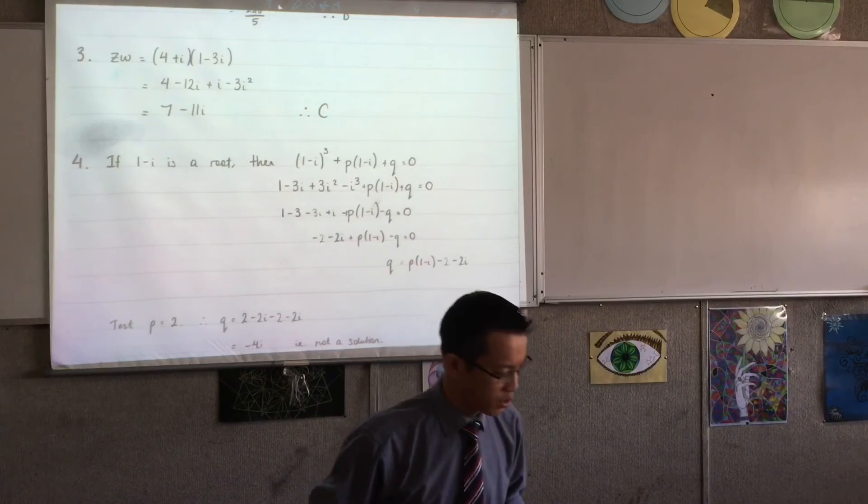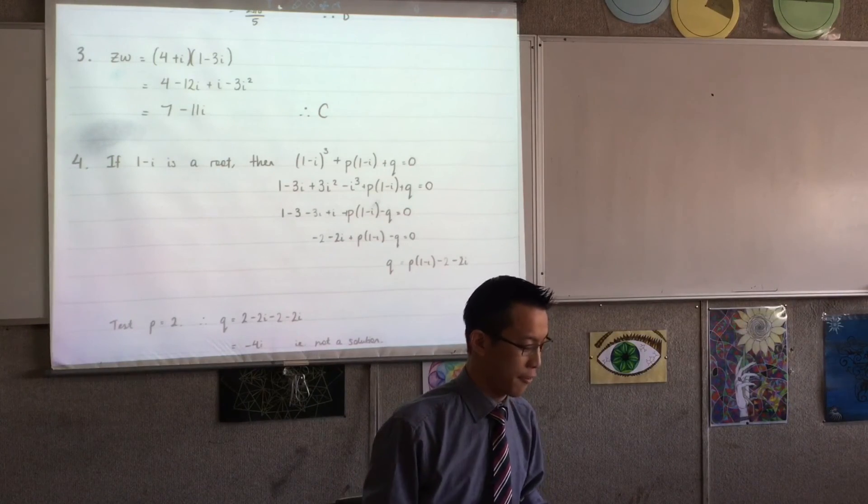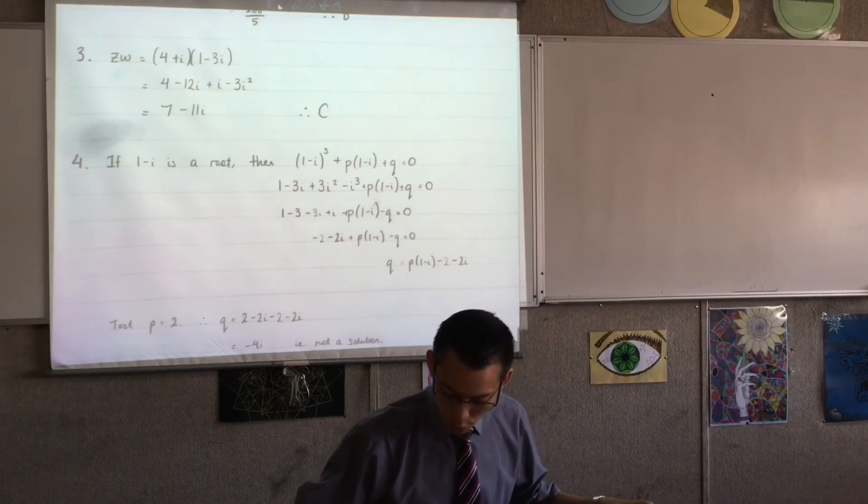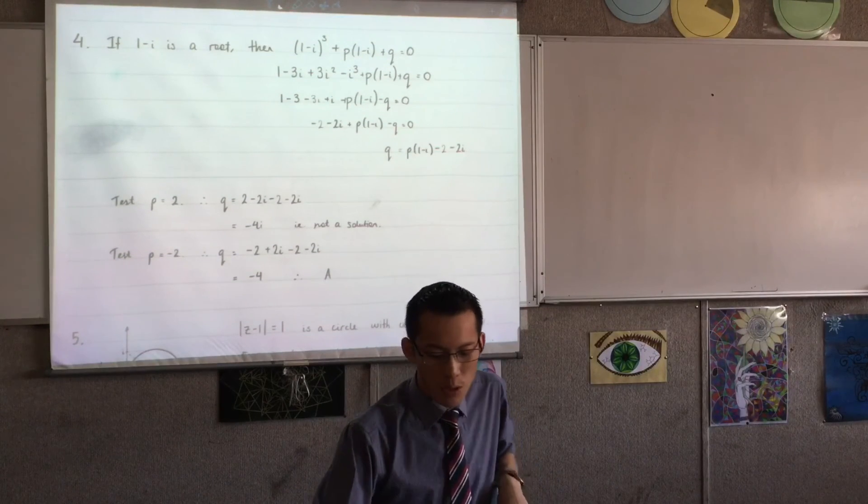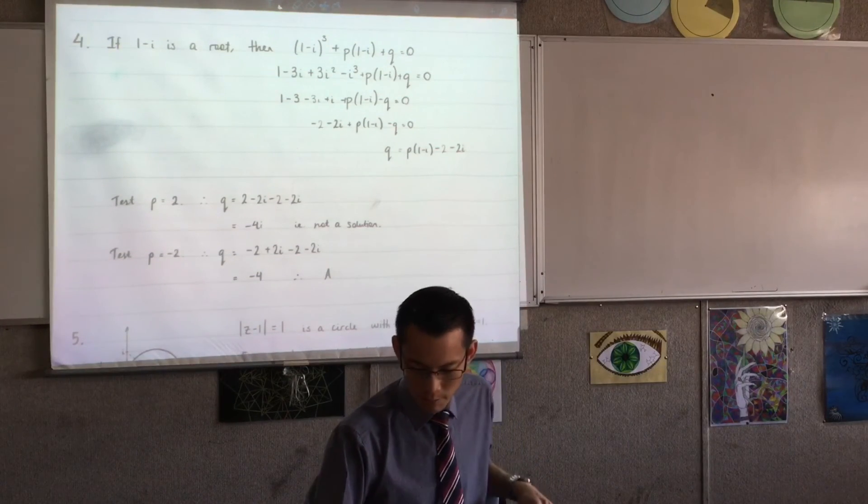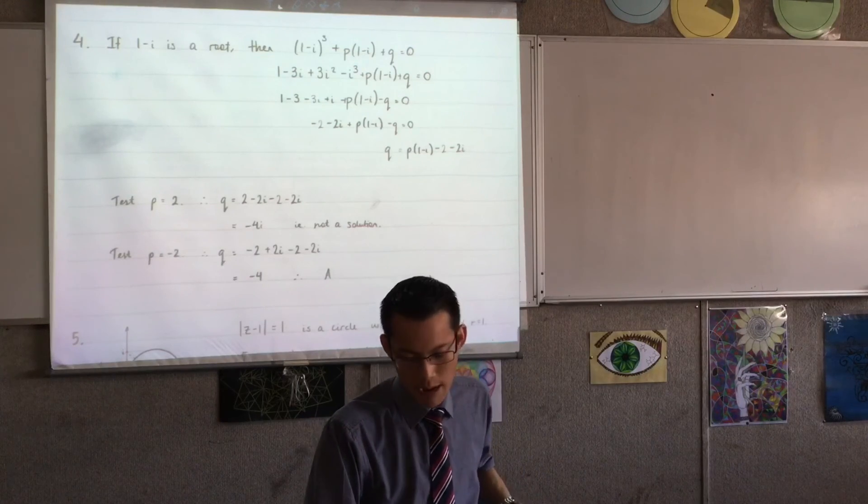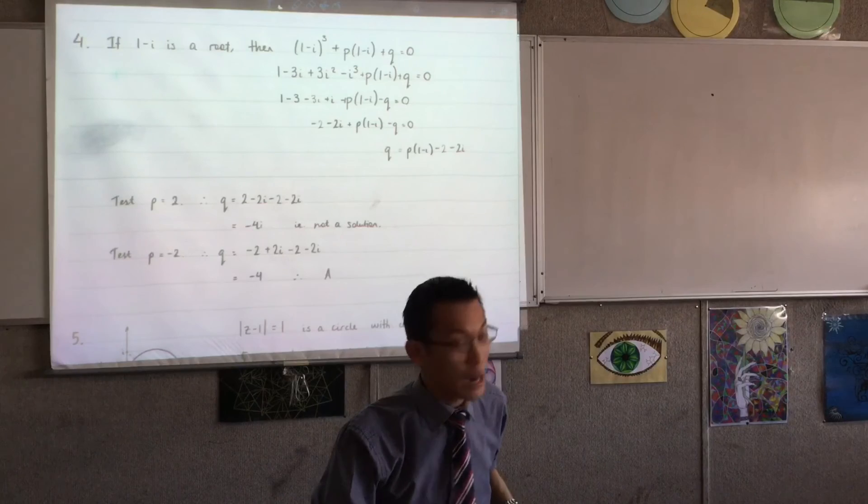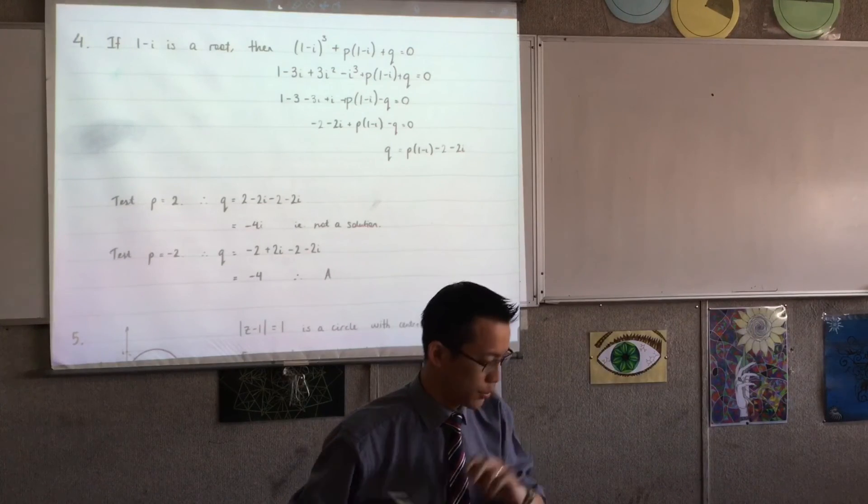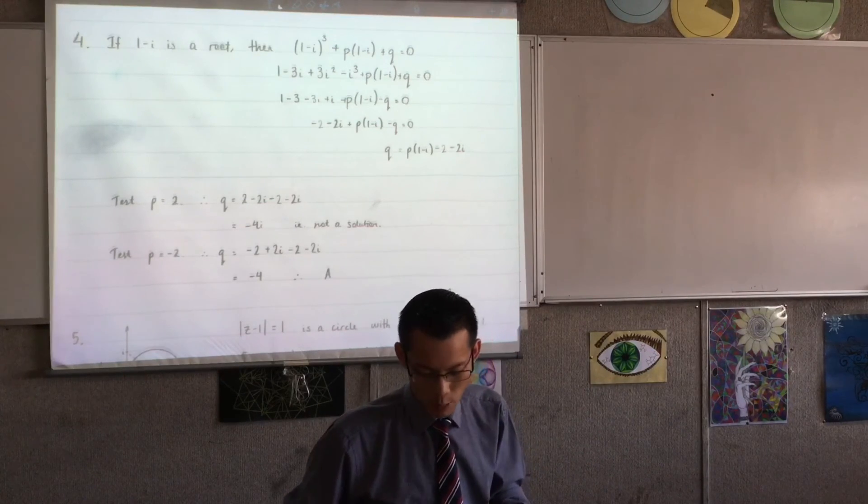Question 3. That was kind of a free mark there. Question 4. This is the way that I went about it. I was using the factor theorem, so I substituted it in, and then I tested a couple of values. There are probably more efficient paths through it, but that would have gotten you there, so that's fine. You could have just tried out all the values and then solved that would also work.